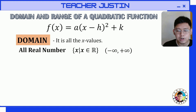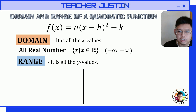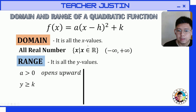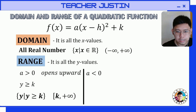For the range of our quadratic function, it is all the values of y or f(x). We have two conditions. First, if a is greater than zero, the parabola opens upward, so y will be greater than or equal to k, where k is the y-coordinate of our vertex — the minimum value. We can write it as: y such that y is greater than or equal to k, or in interval form from k to positive infinity.